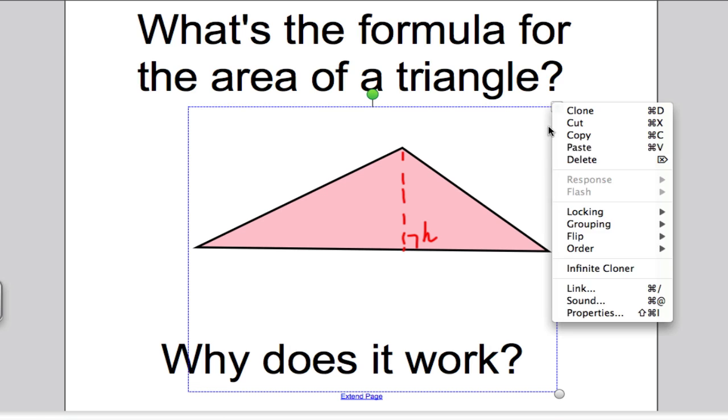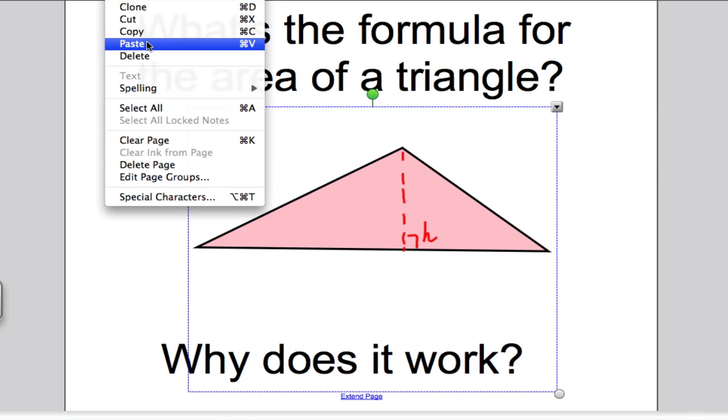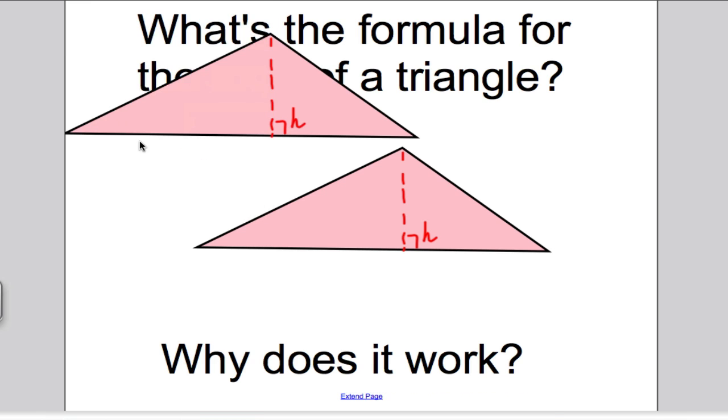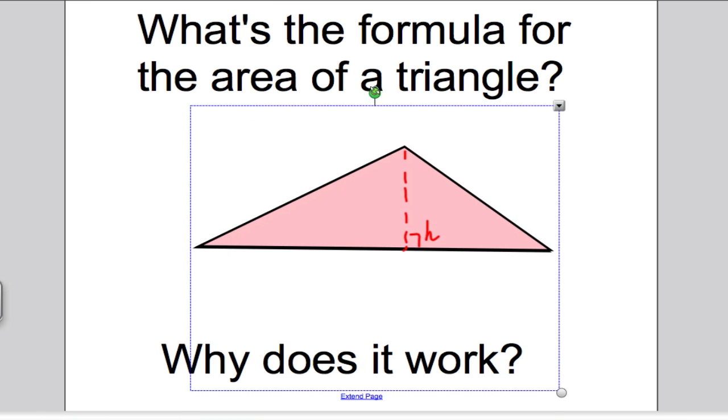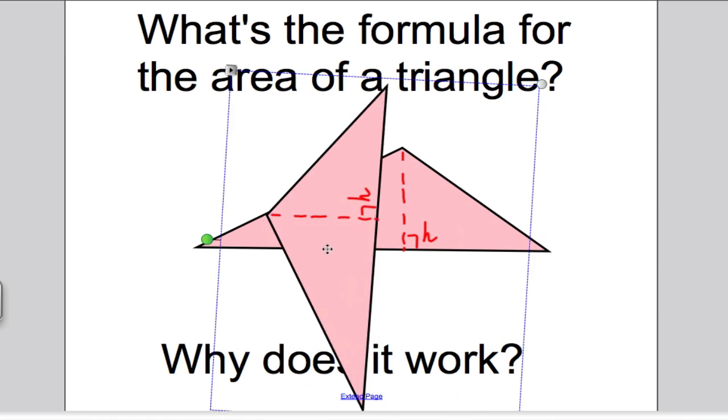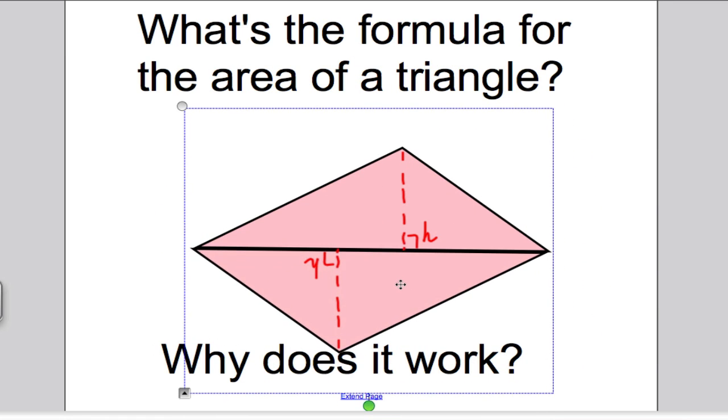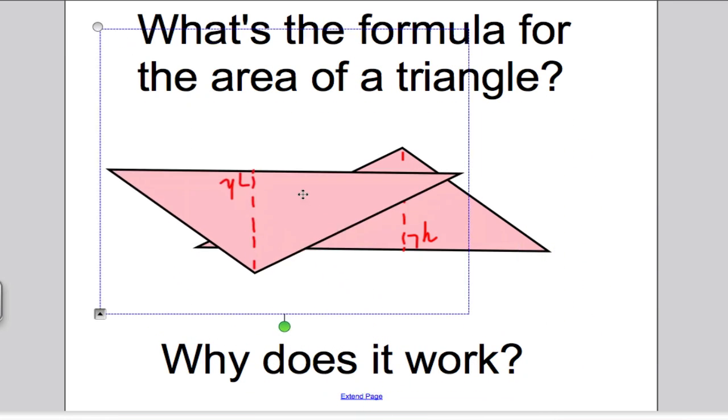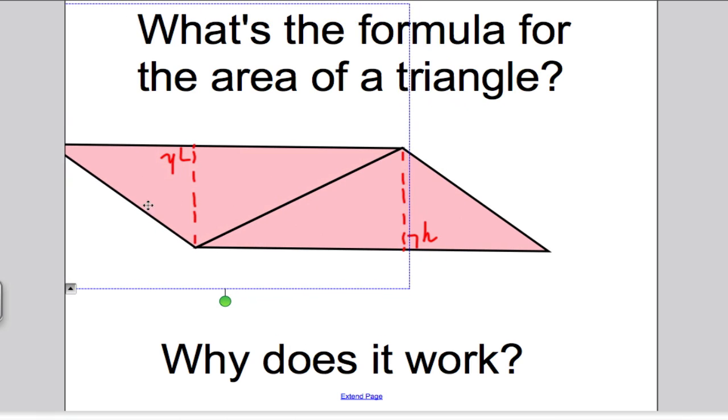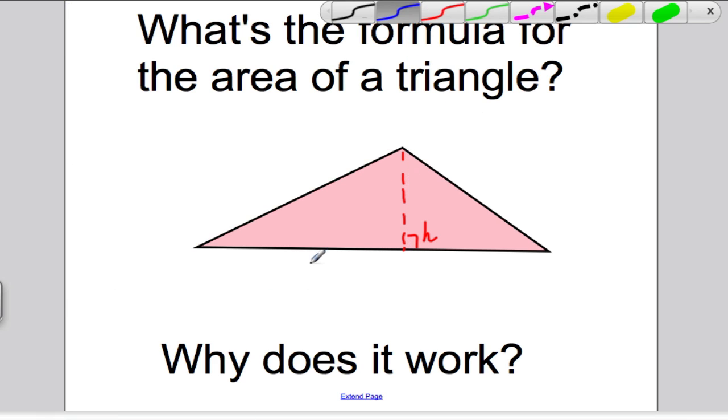Why does that one work? Well, for the same reason. If we copy that and paste, and we twist it around, like that, then that forms a parallelogram. Or you can put it there even if it's more easy to watch. That's a parallelogram. And the area of a parallelogram is base times perpendicular height. So half a parallelogram is base times perpendicular height divided by 2.